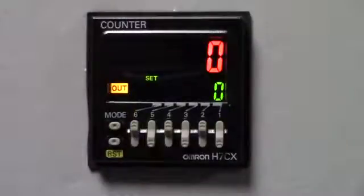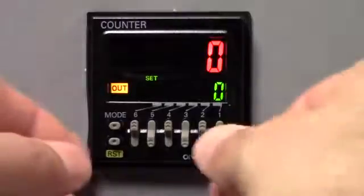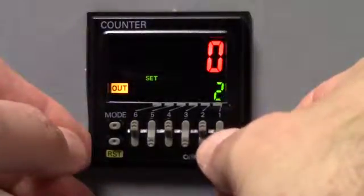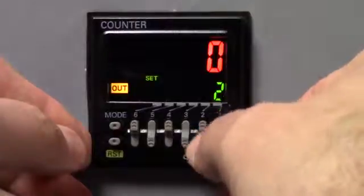So now we are back at the main display, where we have the process value set zero and the set value set zero. So now we are going to go ahead and we're going to set the set value. And in this case, I'm going to go and set the set value at 25.